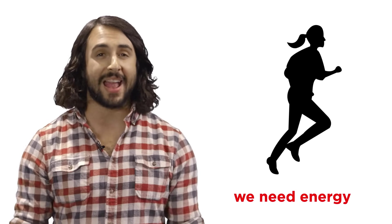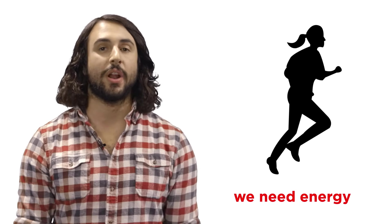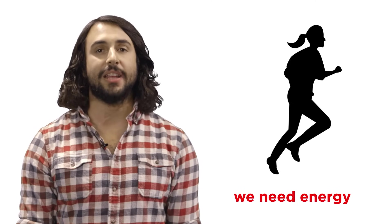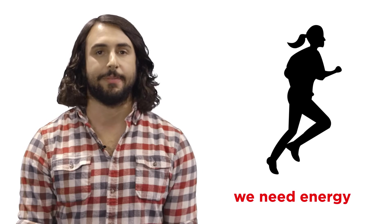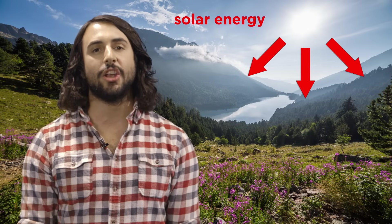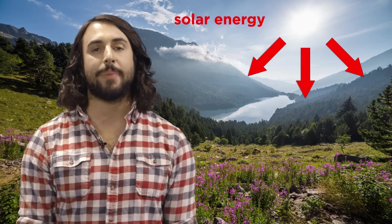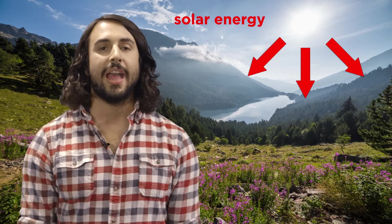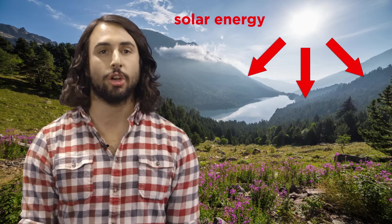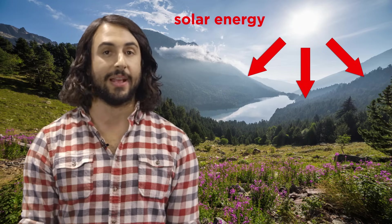We need energy to do literally anything, from running a race to simply breathing, and every cell in your body is furiously producing all this energy all the time. Where does this energy come from? Well, technically it arrives from the sun. The sun is releasing enormous amounts of energy as a byproduct of nuclear fusion reactions, and that energy makes its way to earth where it can be absorbed by plants.